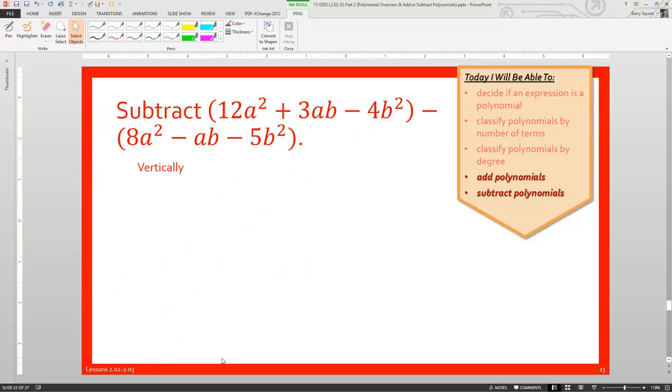Okay. Here's a longer one. And it's got multiple variables. So we've got a's and we've got b's. So if we're doing this vertically, we still have to match those like terms together. So vertically, we might say 12a² plus 3ab minus 4b². And then we're going to subtract 8a² minus ab minus 5b².